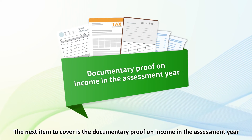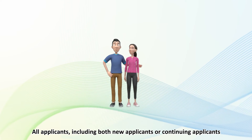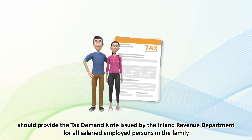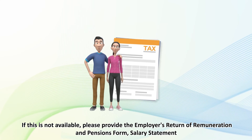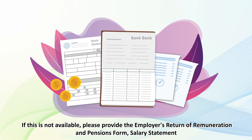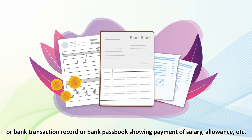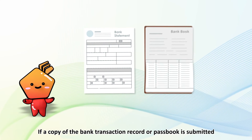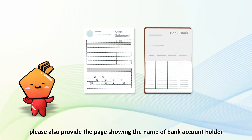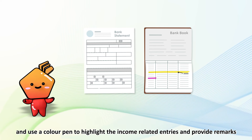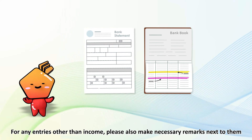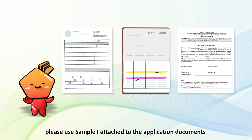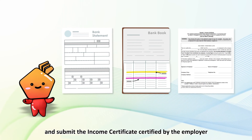The next item is the documentary proof on income in the assessment year. All applicants, including both new applicants and continuing applicants, should provide the tax demand note issued by the Inland Revenue Department for all salaried employed persons in the family. If this is not available, please provide the employer's return of remuneration and pensions form, salary statement, or bank transaction record, or bank passbook showing payment of salary, allowance, etc. If a copy of the bank transaction record or passbook is submitted, please also provide the page showing the name of the bank account holder, and use a color pen to highlight the income-related entries and provide remarks. If none of the above income proofs is available, please use sample one attached to the application documents and submit the income certificate certified by the employer.